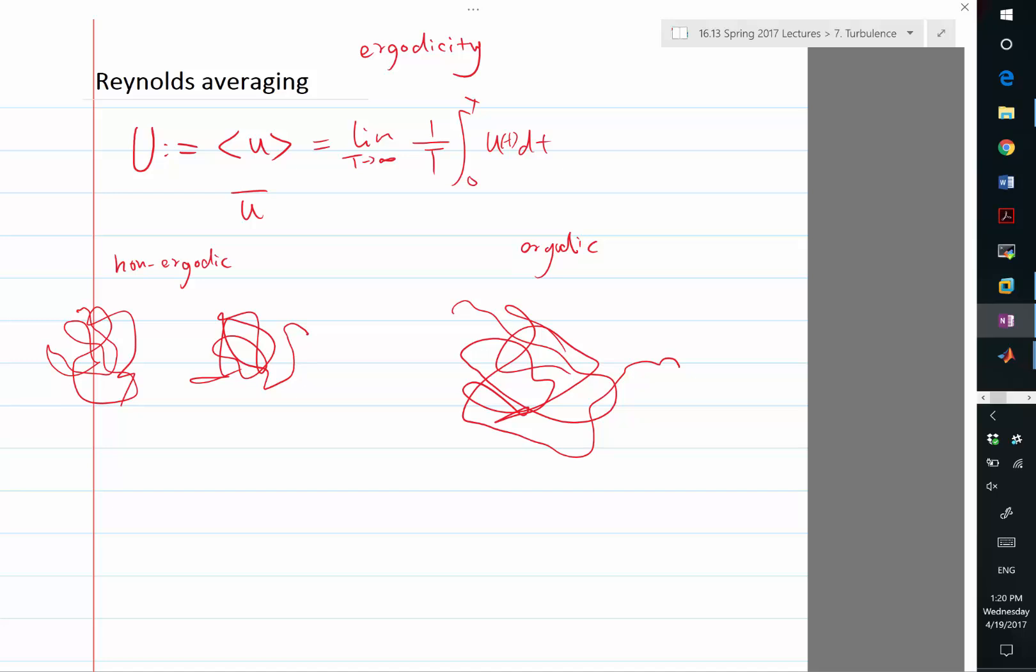Ergodicity assumes that the time average is independent of initial condition. It also assumes that under some mathematical conditions, this infinite time average is equal to an ensemble average. What does ensemble average mean?